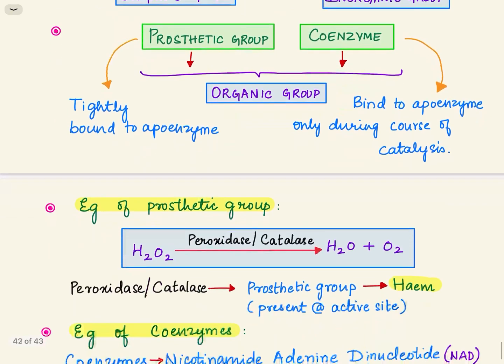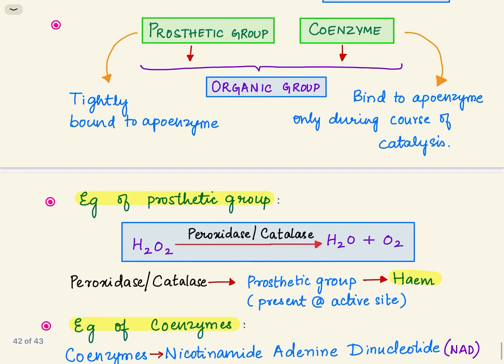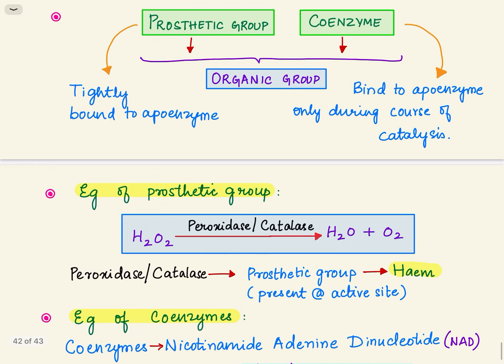What is the difference between prosthetic group and coenzyme? Both are organic groups. Prosthetic group binds tightly to the enzyme, always attached to the apoenzyme.